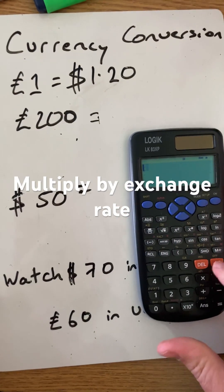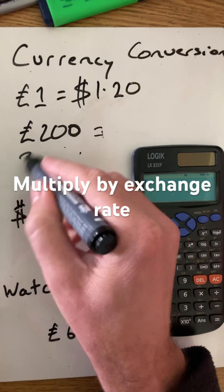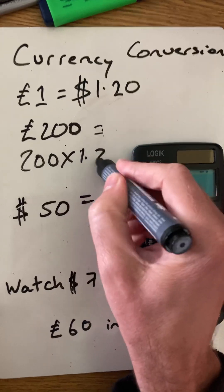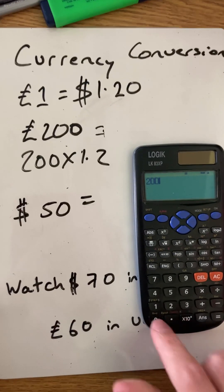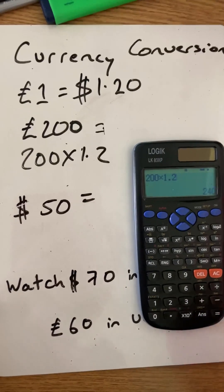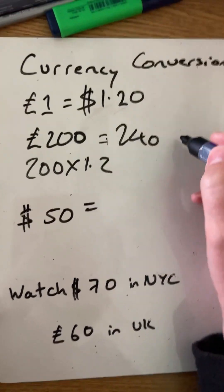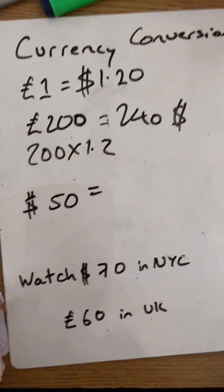What you do then is 200 times 1.2. Type that into your calculator if it's a calculator question. That gives you $240 US dollars — I should put the dollar symbol at the front.